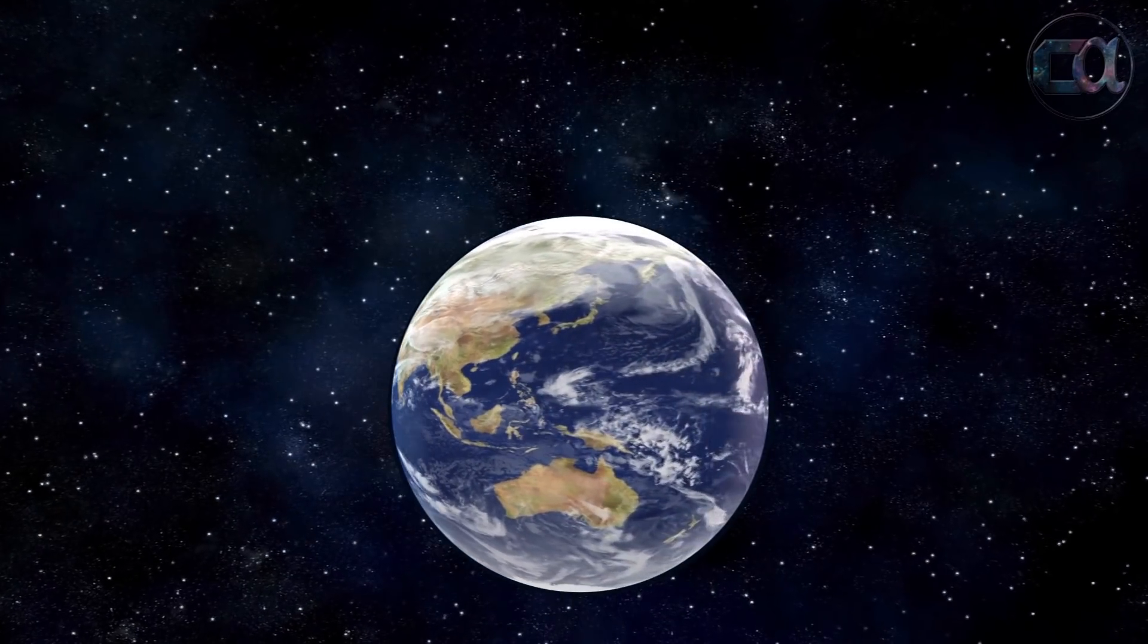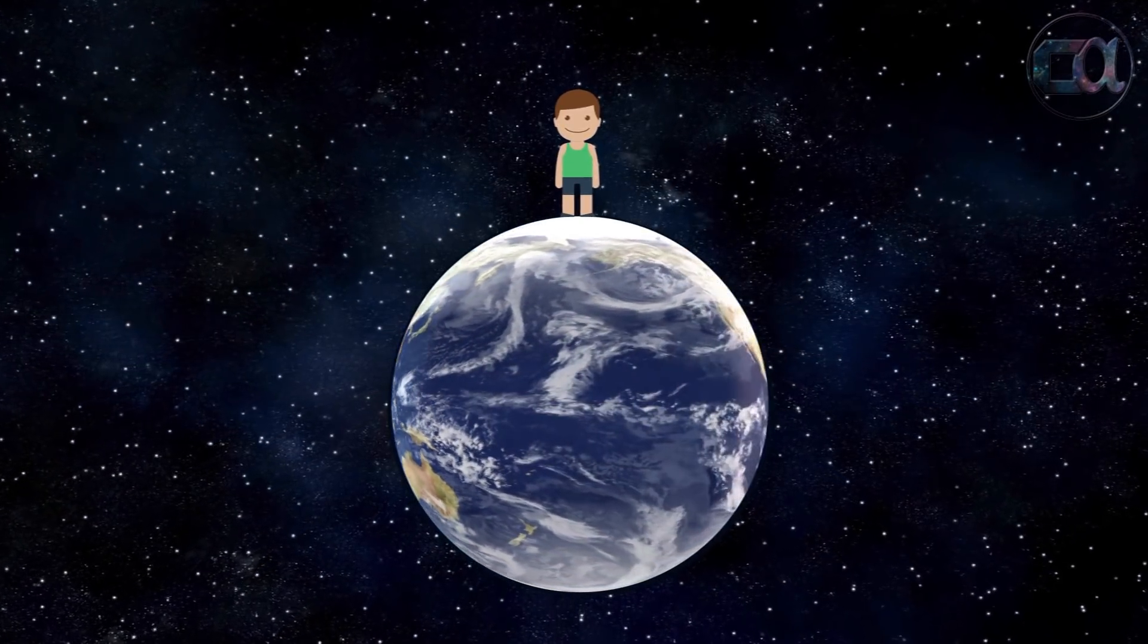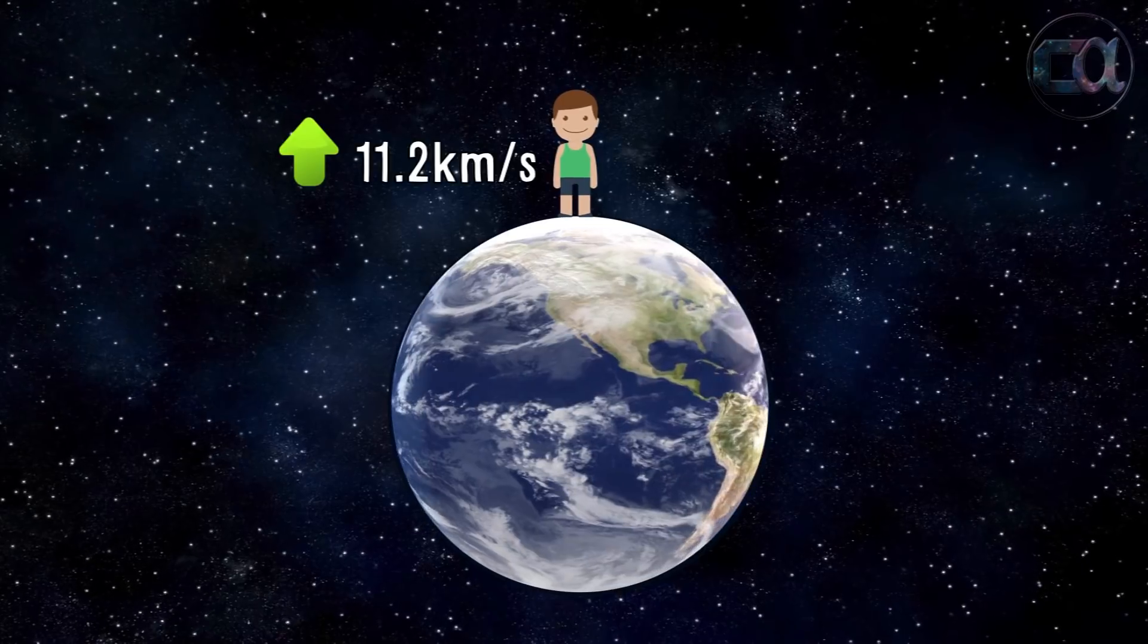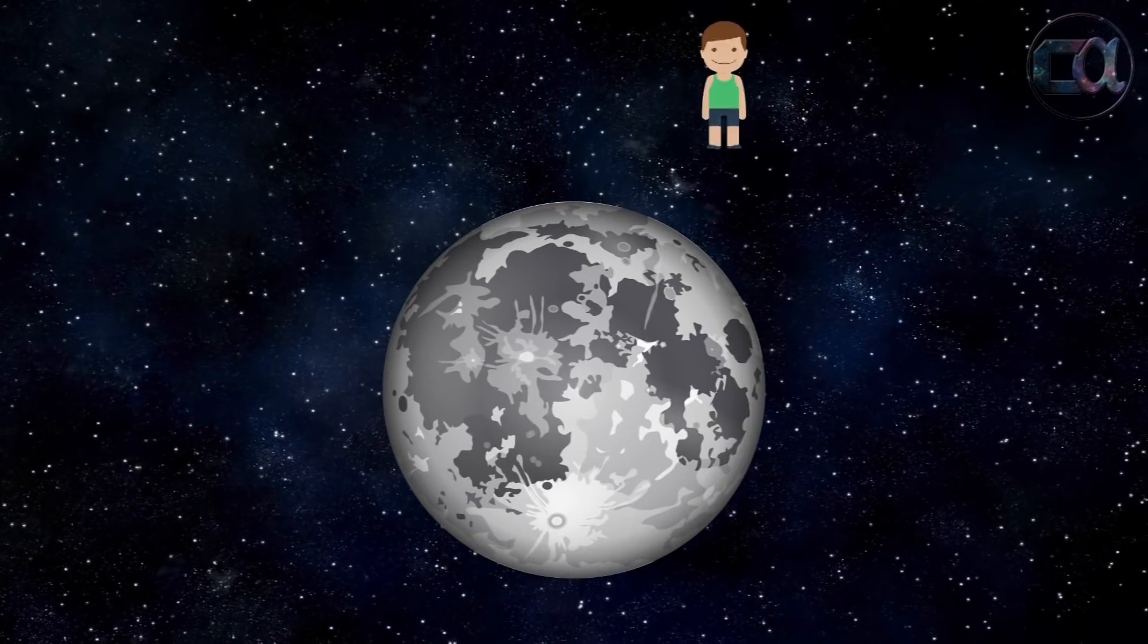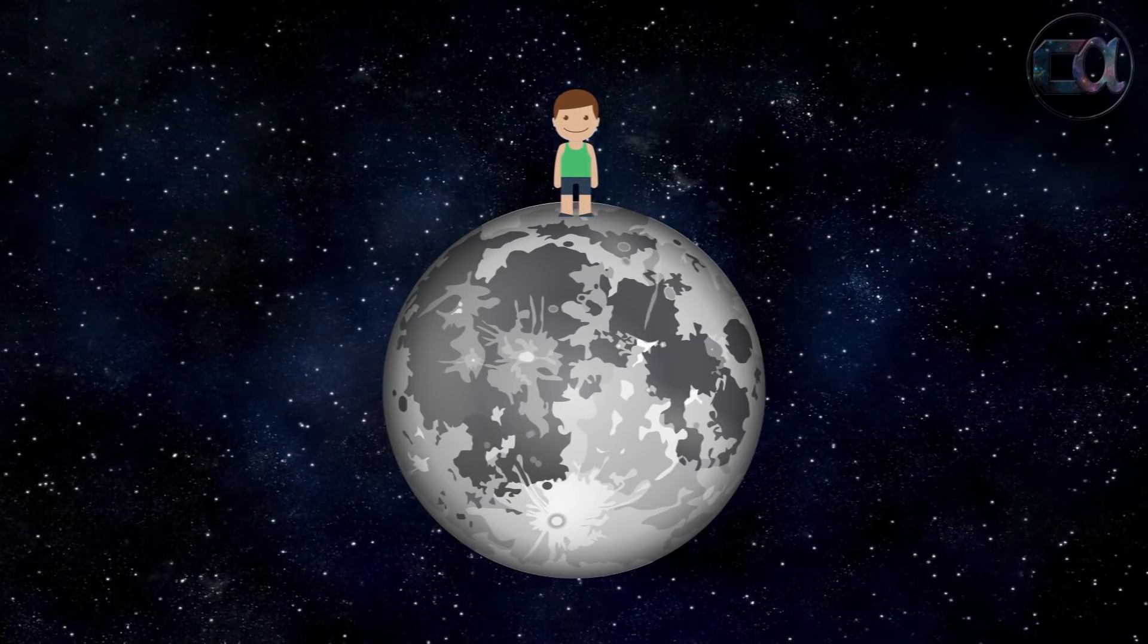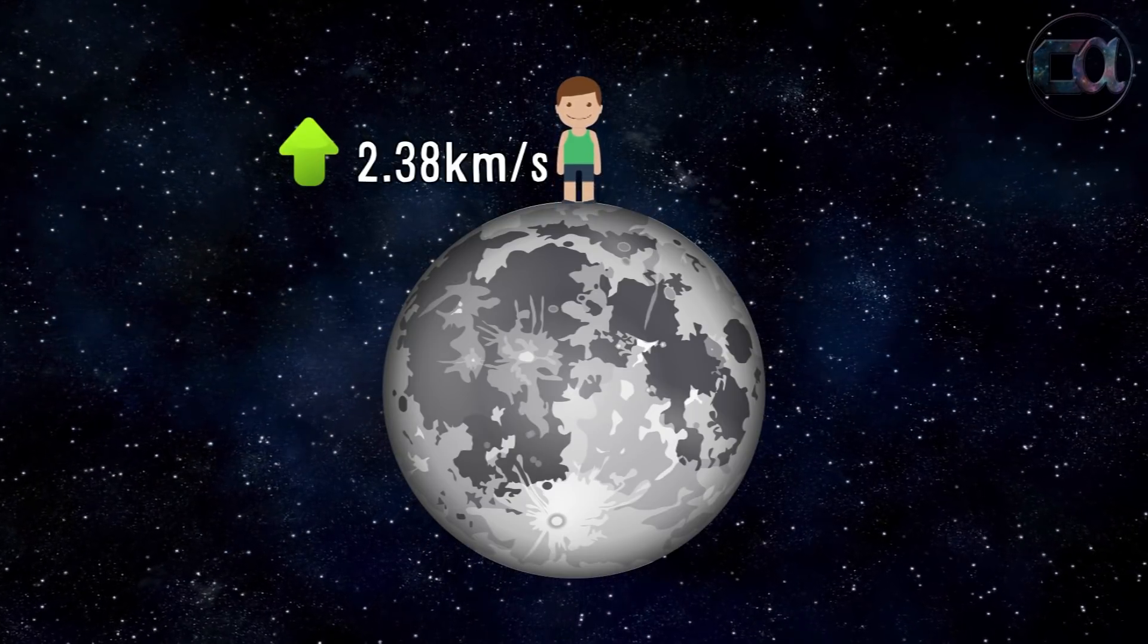So in summary, everything that comes to earth stays on earth until it has a speed faster than 11.2 kilometers per second. Everything that goes to the moon stays on the moon until it has a speed faster than 2.38 kilometers per second.